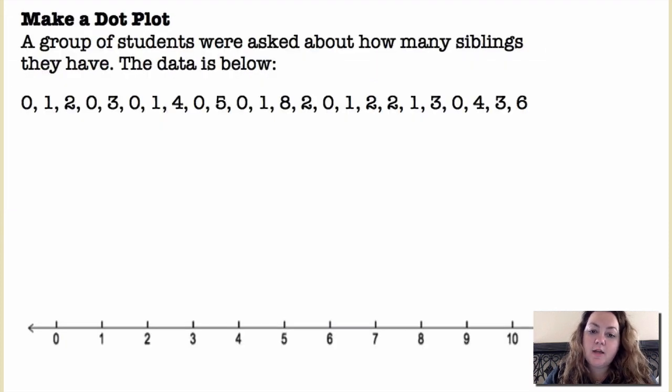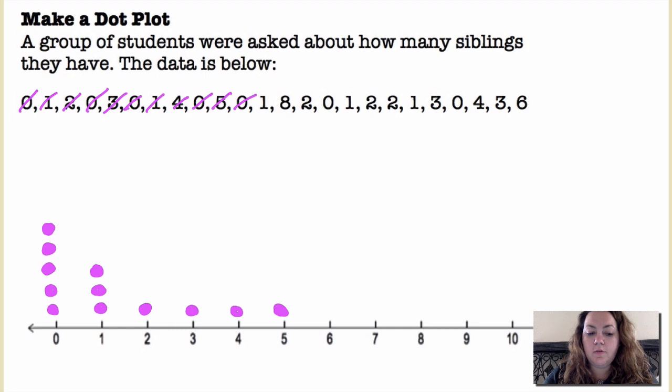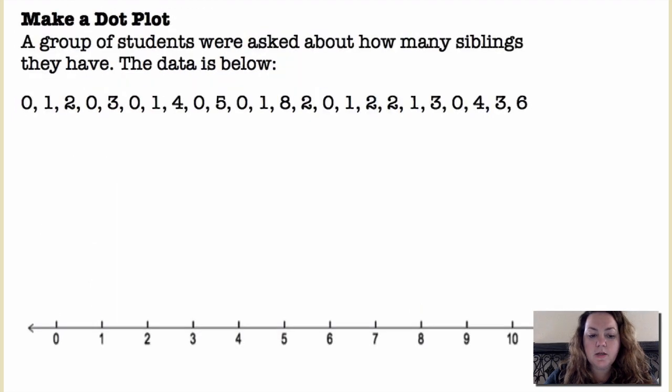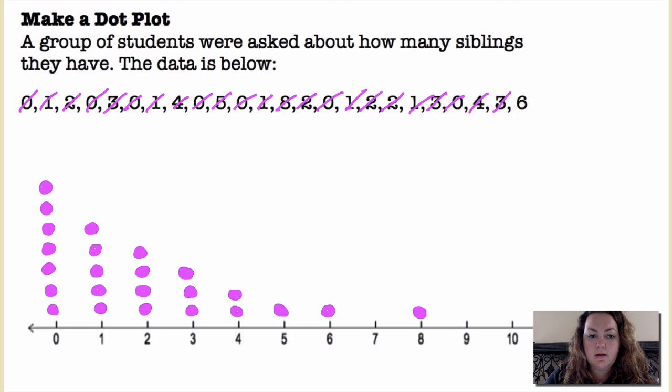Make a dot plot. A group of students were asked about how many siblings they have. The data is below. So zero, we're going to put a dot there. One, put a dot there. Two, and we're just going to keep going through this list so plotting all of these dots on our number line until we get all of them there and so I can already kind of start to see a trend and it looks like it's skewed, this distribution, and we'll learn a little bit more about that when we learn about the different shapes. But I would say this distribution is skewed right.